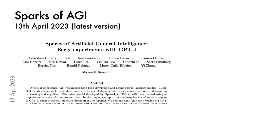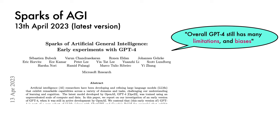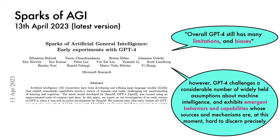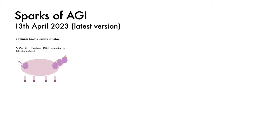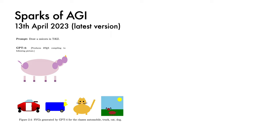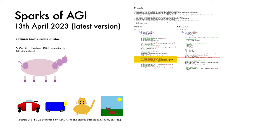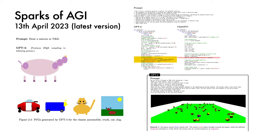Next, I'll briefly mention the Sparks of AGI paper by Microsoft Research, originally released in March but recently updated. Two key quotes: overall, GPT-4 still has many limitations and biases; however, it challenges a considerable number of widely held assumptions about machine intelligence, and exhibits emergent behaviors whose sources are at this moment hard to discern precisely. Examples highlighting its visual understanding include drawing a unicorn in ticks and generating SVG diagrams. It can also implement a custom optimizer in PyTorch and generate a somewhat complex 3D HTML game in JavaScript.